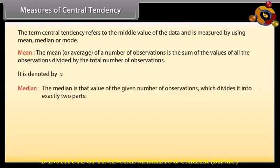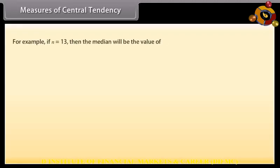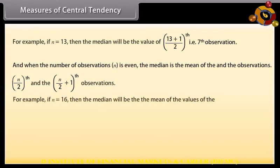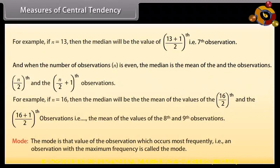Median: The median is that value of the given observations which divides it into exactly two equal parts. When the number of observations n is odd, the median is the value of the ((n+1)/2)th observation. For example, if n = 13, the median is the 7th observation. When n is even, the median is the mean of the (n/2)th and (n/2 + 1)th observations. For example, if n = 16, the median is the mean of the 8th and 9th observations. Mode: The mode is that value of the observation which occurs most frequently — the observation with the maximum frequency.